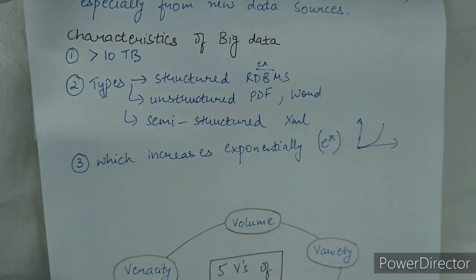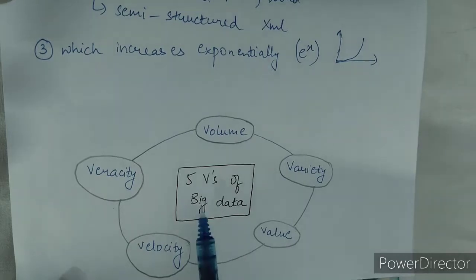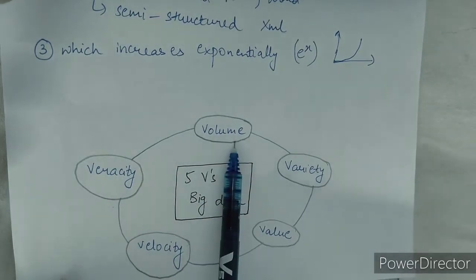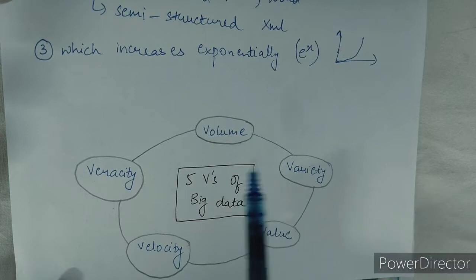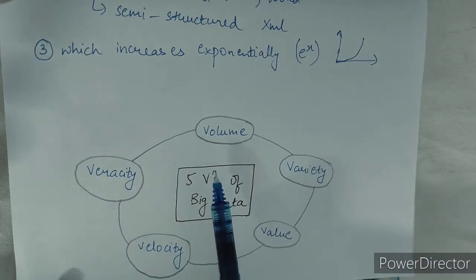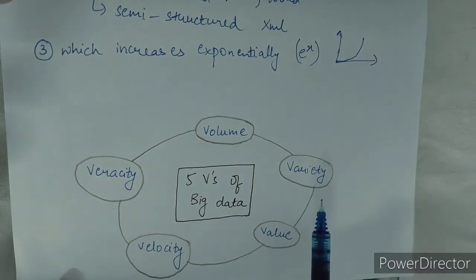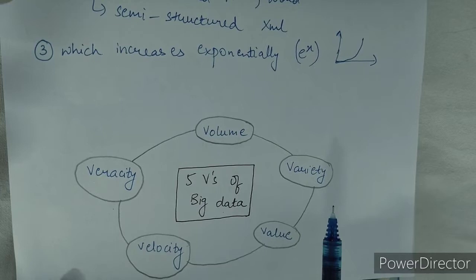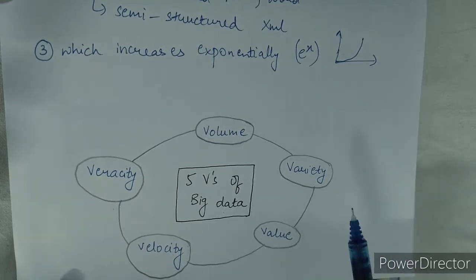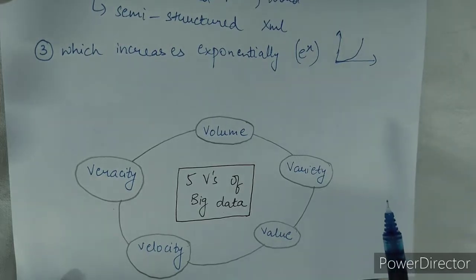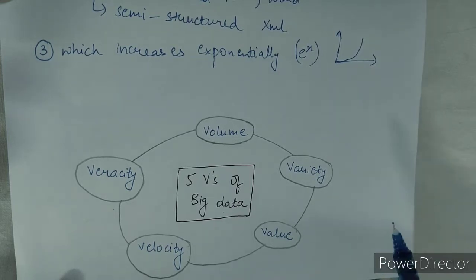Next we have the five V's of big data. First is volume. Volume is very important because it determines whether the data we have can be called big data or not — it refers to the amount of data. Next is variety, which means what type is your data and what is its nature. It is also important because it helps us use and analyze our data effectively — like structured, unstructured, or semi-structured.